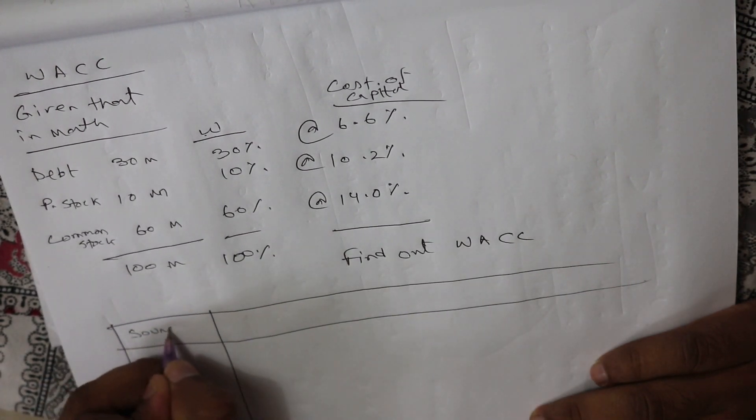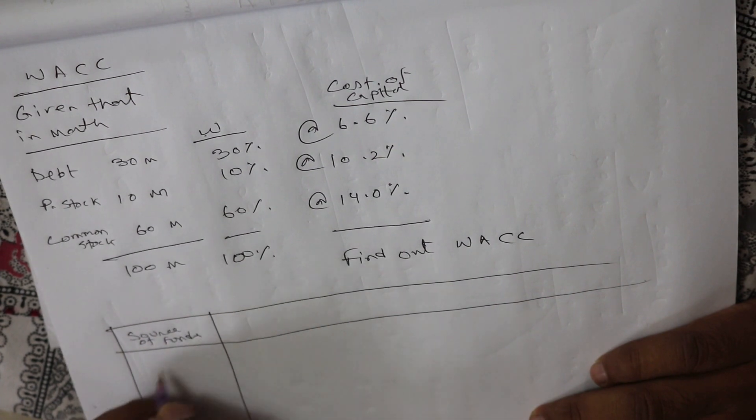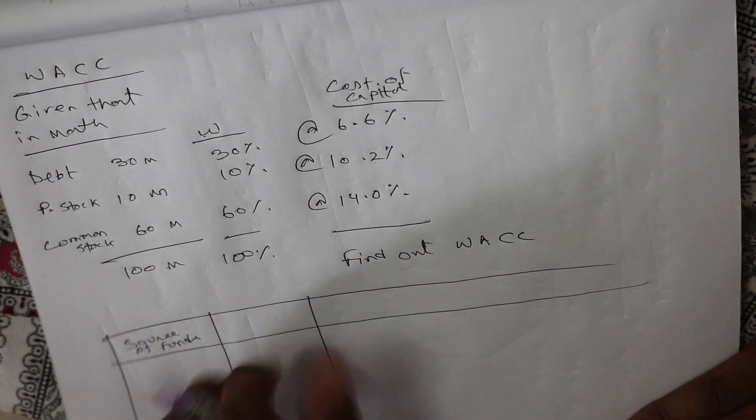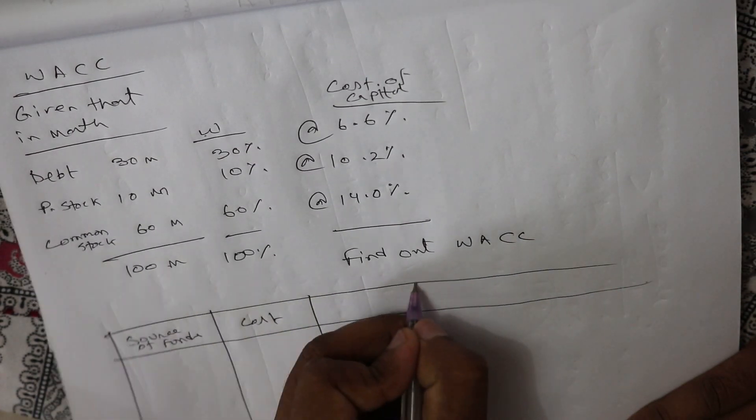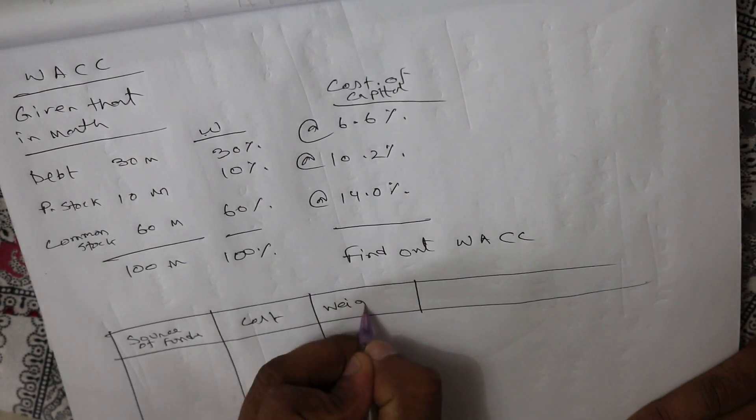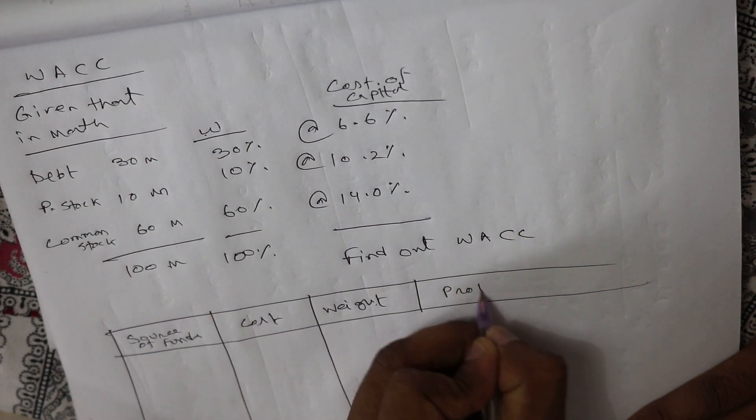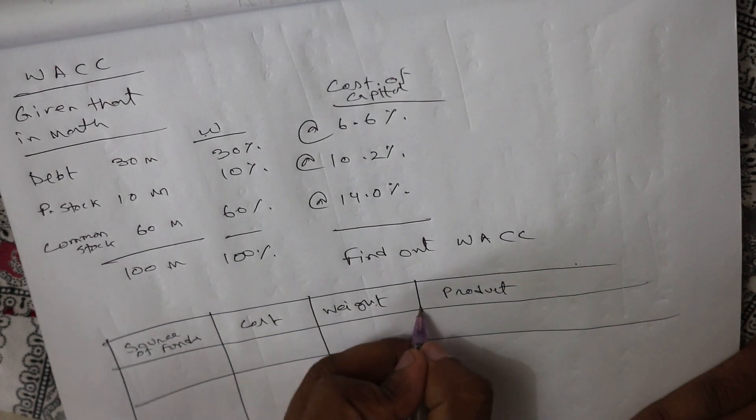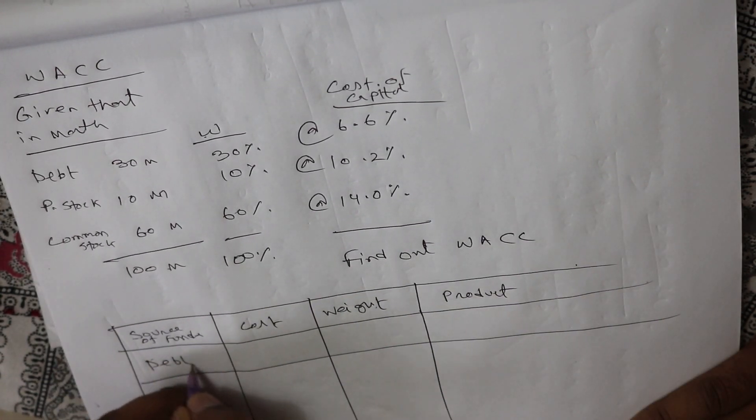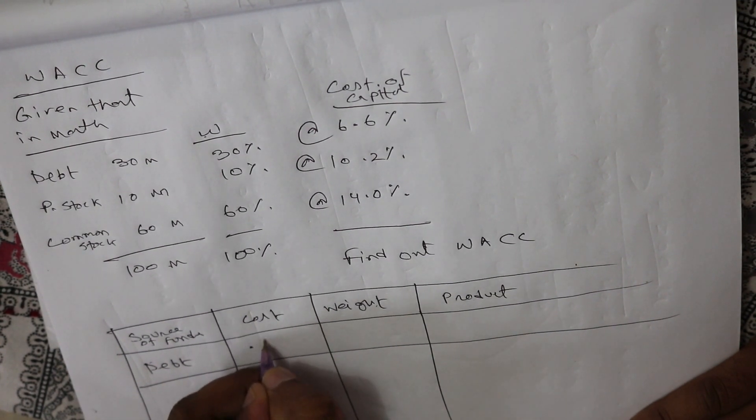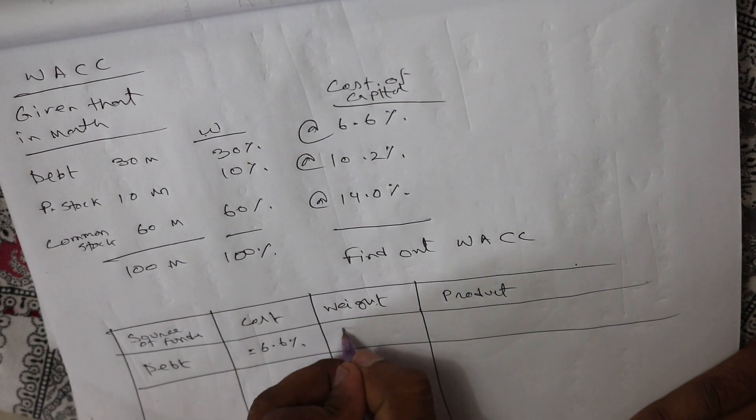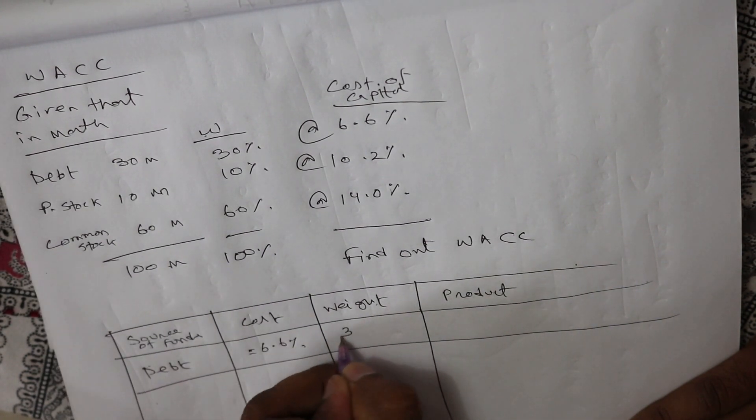source of funds, cost, weight, product. Debt cost 6.6% and weight is 30%.